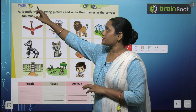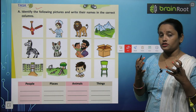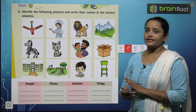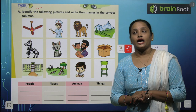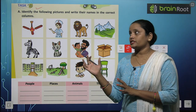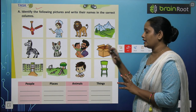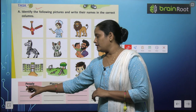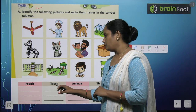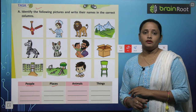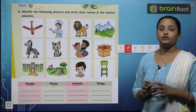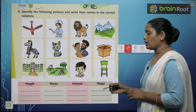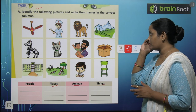Let's do this exercise to understand better. Identify the following pictures and write their names in the correct column. Pictures ko dhyan se dekhna hai aur unke naam likhne hain neechi columns mein. The columns are: People, Place, Animal, and Thing. Animal ko bhi hum naming words mein likhte hain. Koi bhi saamaan, koi bhi cheez — usse bhi hum naming words mein likhte hain.